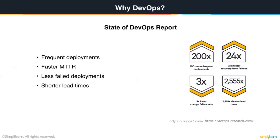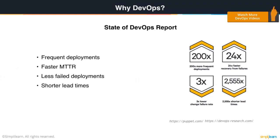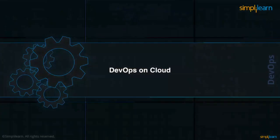As per Gene Kim, one of the chief evangelists for DevOps, one way to measure DevOps implementation is if you tell your deployment team they need to deploy a software right now and their answer is anything but 'yes,' that means they still need to work on their DevOps framework. If you are completely on DevOps, you should be able to deploy anytime and anywhere.